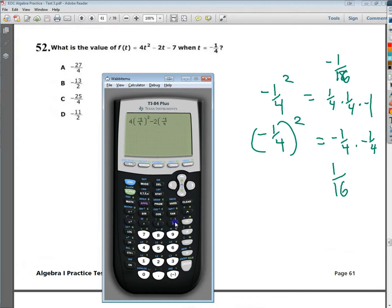And if your calculator isn't as fancy, it doesn't matter. Just change it to -0.25, and then it'll be fine. So as you can see, I've typed in pretty much exactly the way it shows up. So I'm going to hit Enter, and I get -25/4. So I'm going to say my answer to number 52 is C.